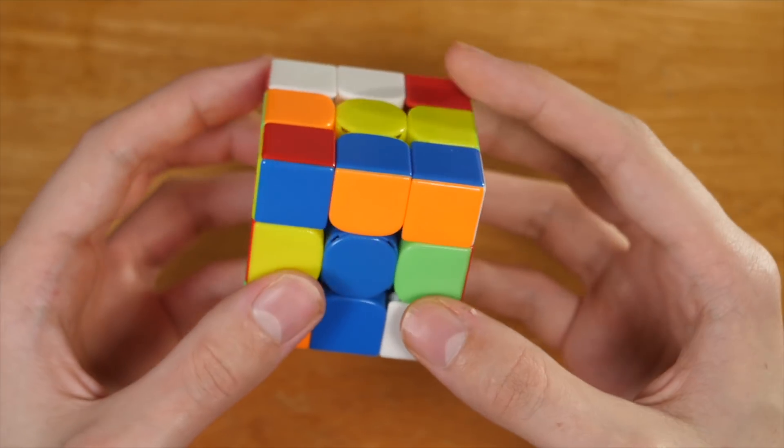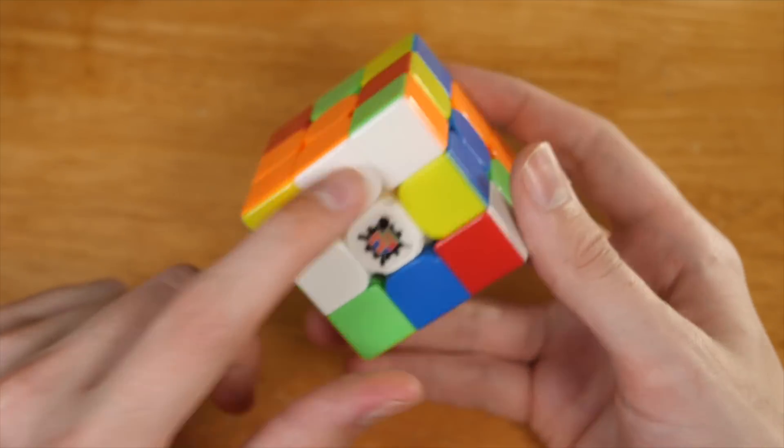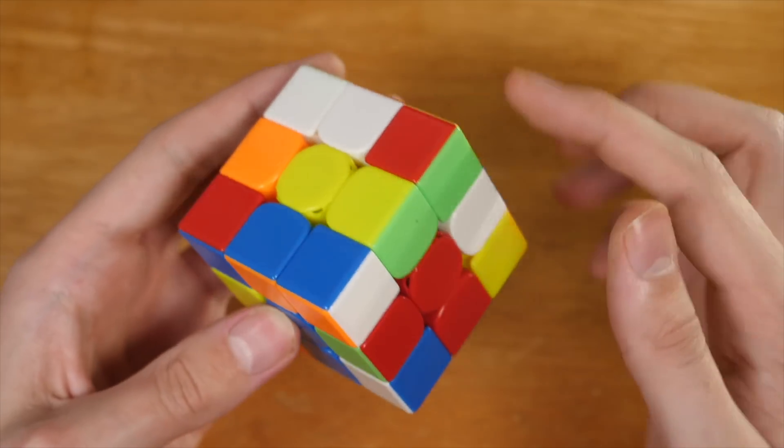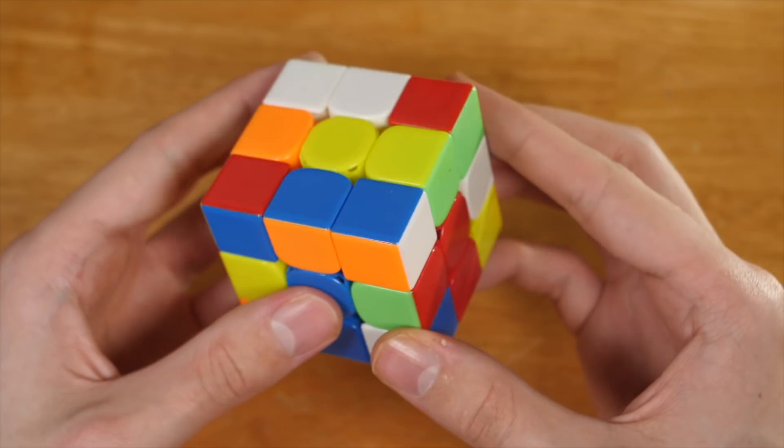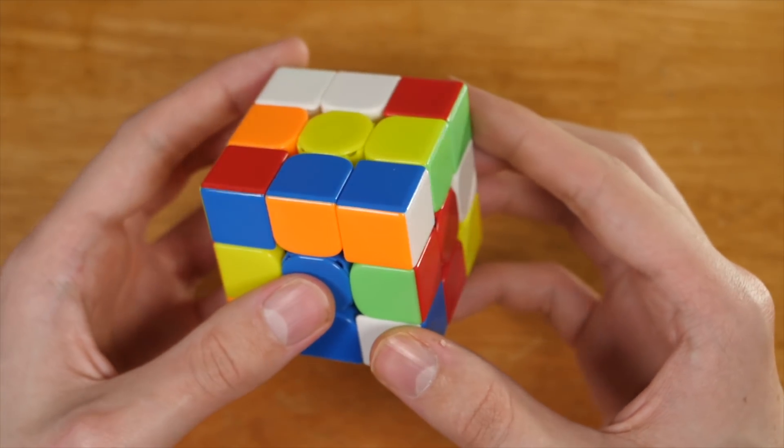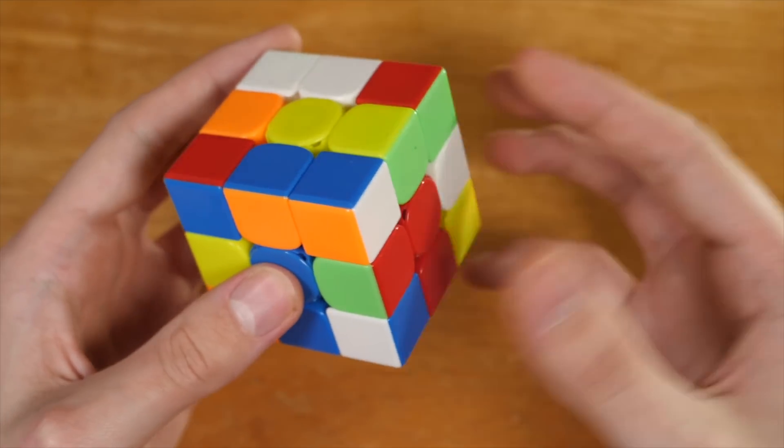For this next solve, he does white cross, noticing that these two cross pieces are already solved. This orange-blue pair is pre-built, and these two edges are very close. So he's actually going to inspect a triple X-cross here with a very nice pseudo-pair setup.